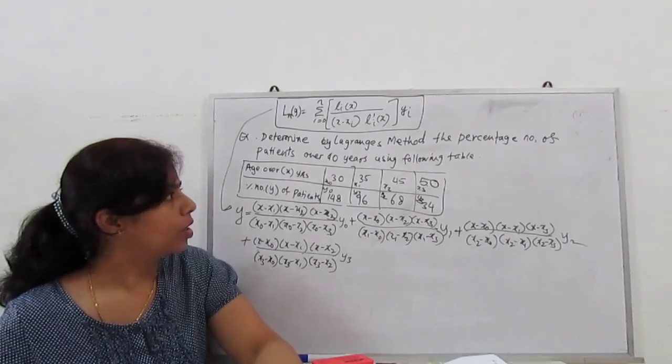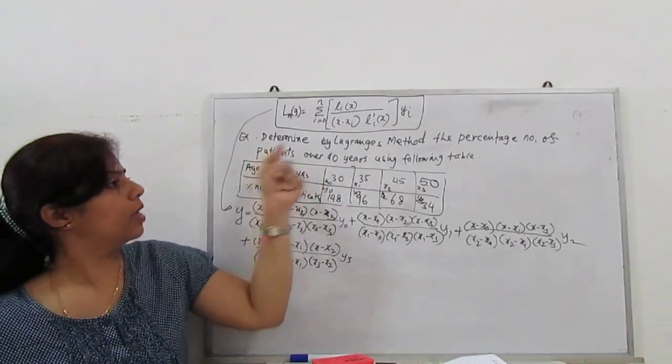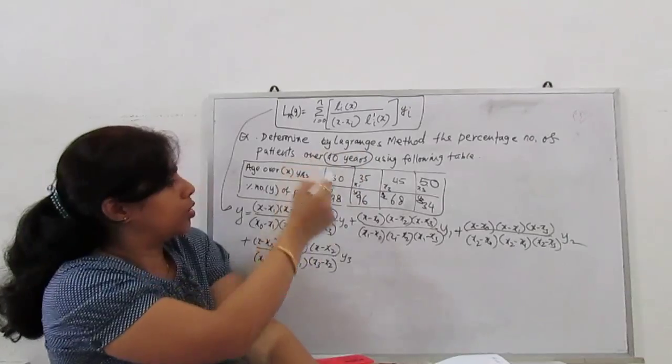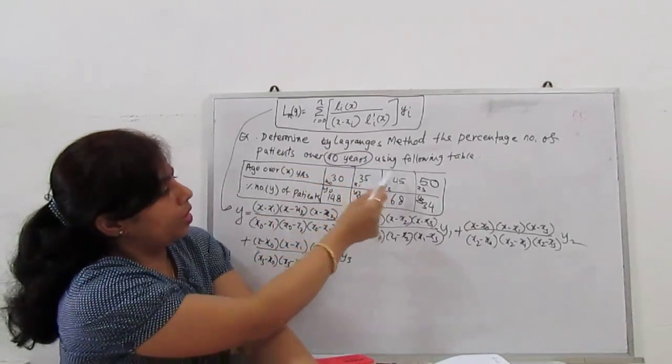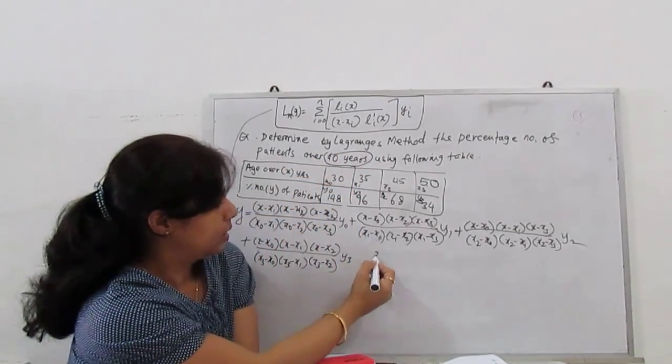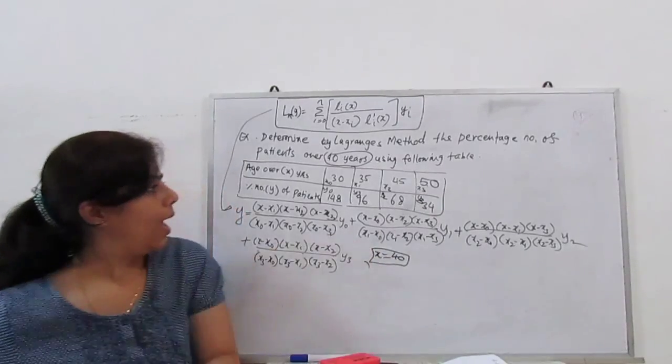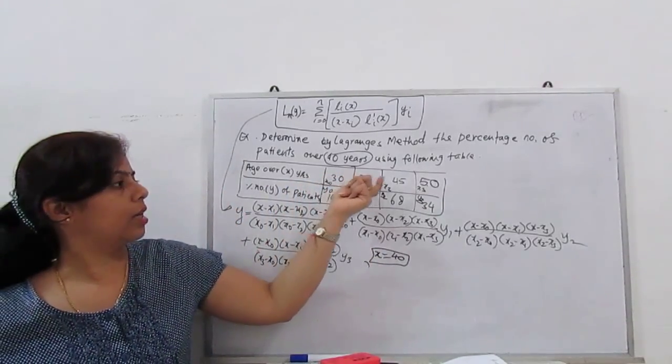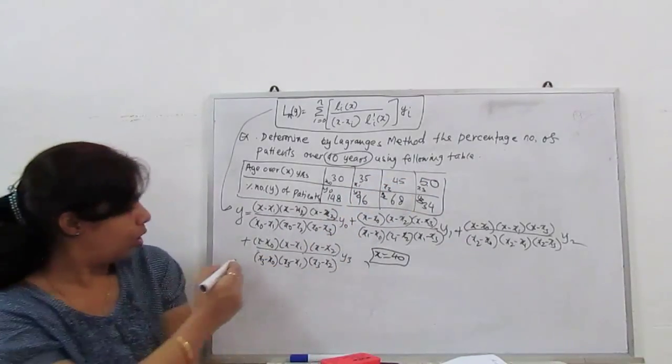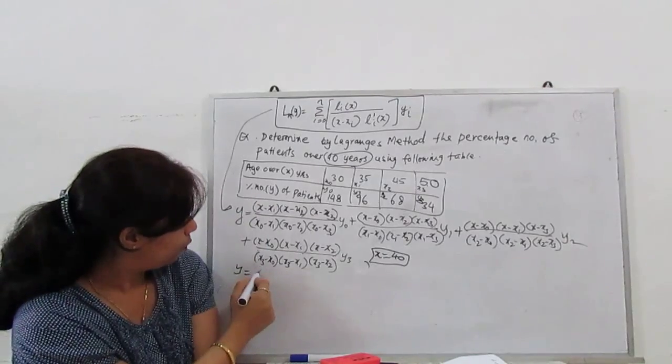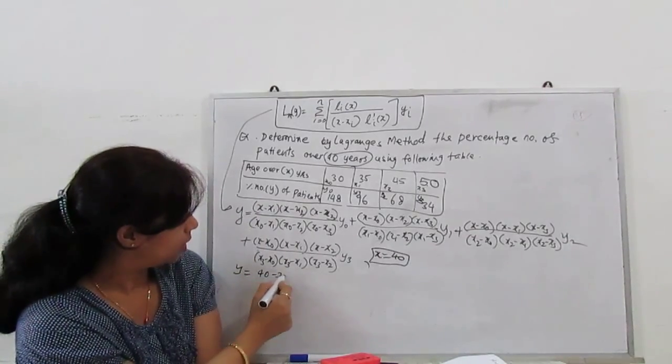Next step is very easy, substitute all values. What is our x? We have to calculate the patient over 40 years, so x is 40.